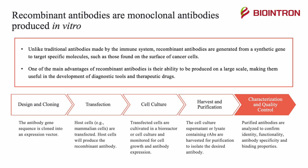The first step to produce these antibodies is design and cloning, where the antibody gene sequence is cloned into an expression vector. Second is transfection: host cells, such as mammalian cells, are transfected to produce the recombinant antibody. Third, transfected cells are cultivated in a bioreactor or cell culture and monitored for cell growth and antibody expression. Fourth, the cell culture supernatant or lysate containing recombinant antibodies is harvested for purification to isolate the desired antibody. Finally, the purified antibodies are analyzed to confirm identity, functionality, antibody specificity, and binding properties.